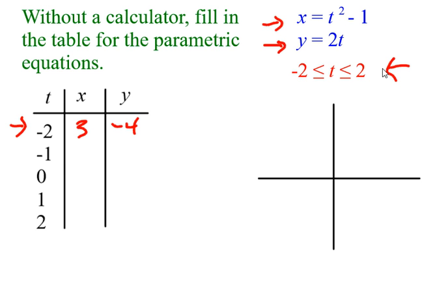And I can do the same thing. Now I move on to negative 1. I get 1 minus 1 is 0. And when I plug it into my y equation, I get negative 2. When t is 0, I'm going to get negative 1 for x and I'm going to get 0 for y.